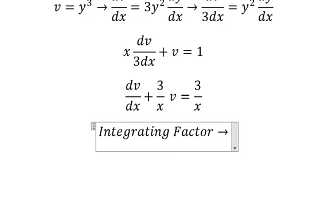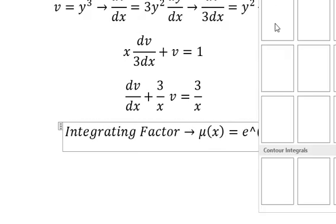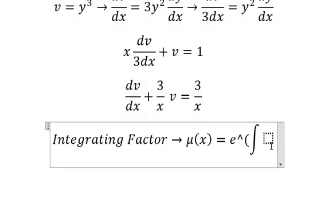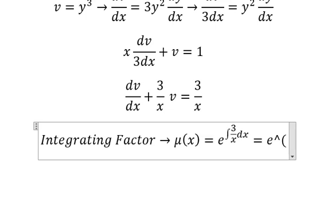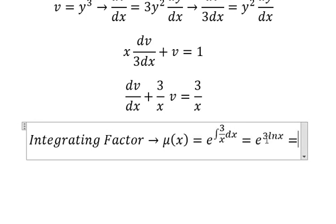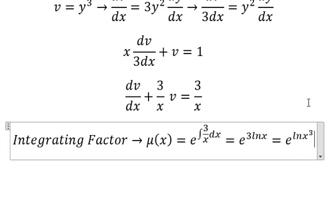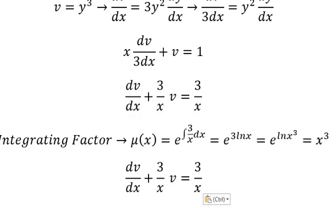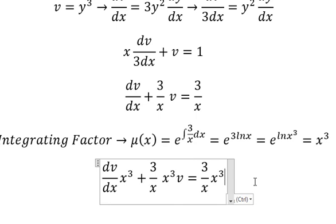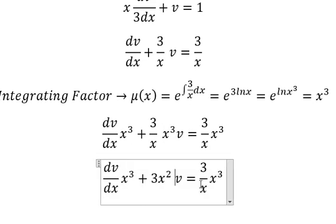We need to find mu of x equals to e to the power of the integral. We see that 3 over x next to v. So that's the integrating factor. We have e to the power of 3 natural log x. We put number 3 inside the natural log, so we have x to the power of 3. That means we multiply both sides by x to the power of 3. This gives us 3x square and 3x square.